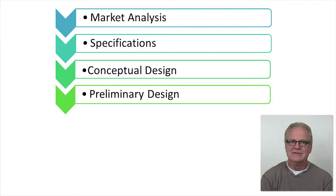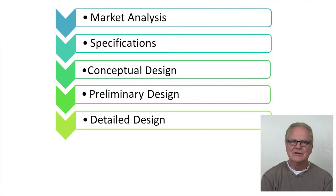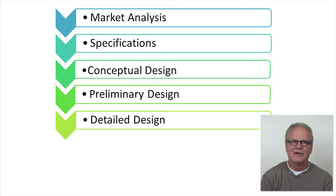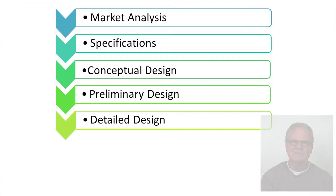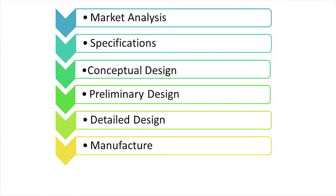These few potential products are transitioned into the preliminary design phase. Emerging from the preliminary design phase will be the product that designers, engineers, and management believe stands the greatest chance of meeting or exceeding customer needs and demands. In the detailed design phase, there are still significant unknowns that need to be resolved, and the parameters of the chosen design are refined and optimized. Once the design is finished and released by engineers, the product enters the manufacturing phase.